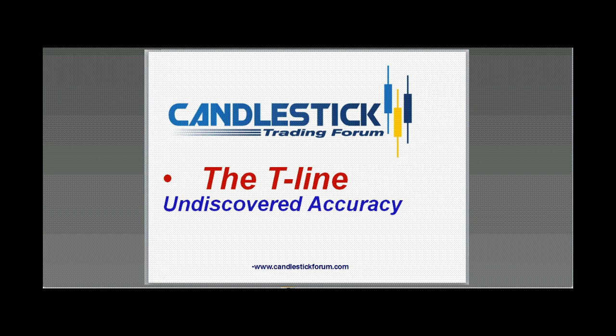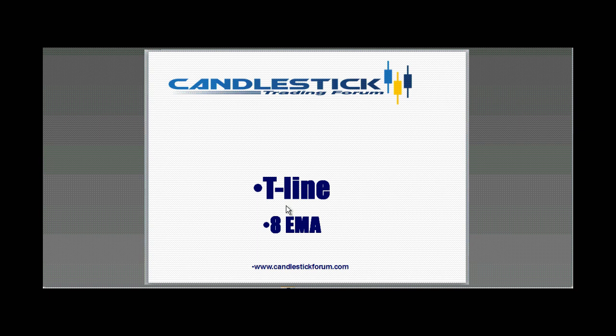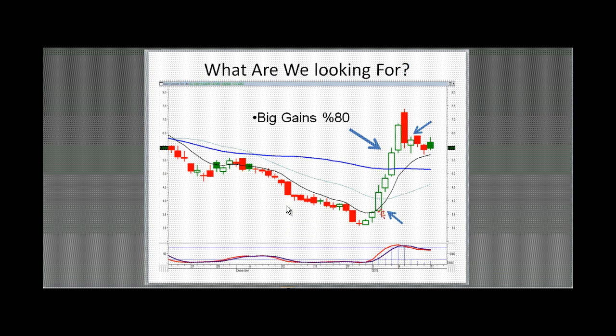Sorry for the delay, I was trying to get everything in order. We're doing a special session tonight on the T-Line, because the T-Line has become a very integrated part of how to trade candlesticks successfully. The T-Line is something that is not really fully comprehended by most investors right now. The T-Line is the eight exponential moving average, and it works extremely effectively for showing us when it's time to be buying positions. It's very important for doing trend analysis.